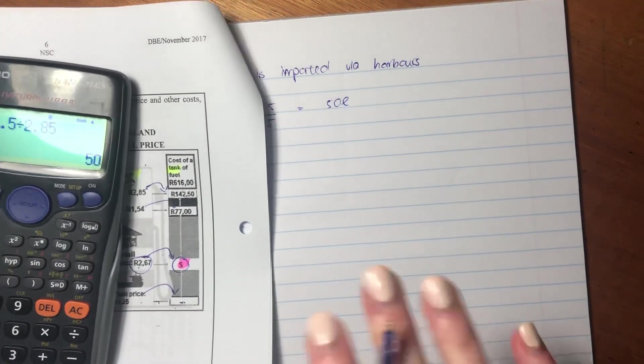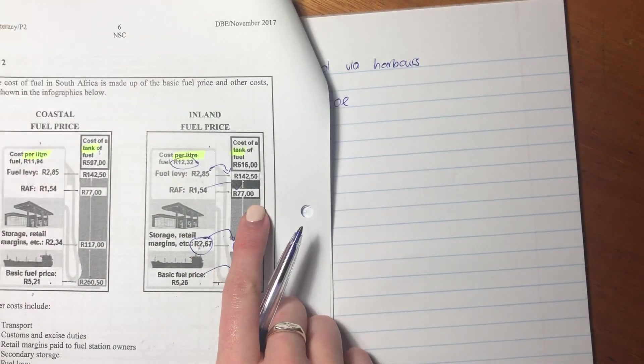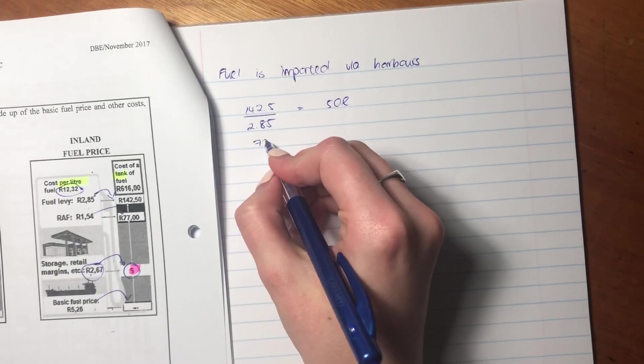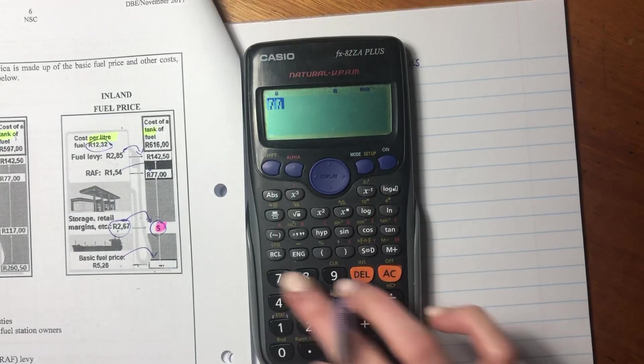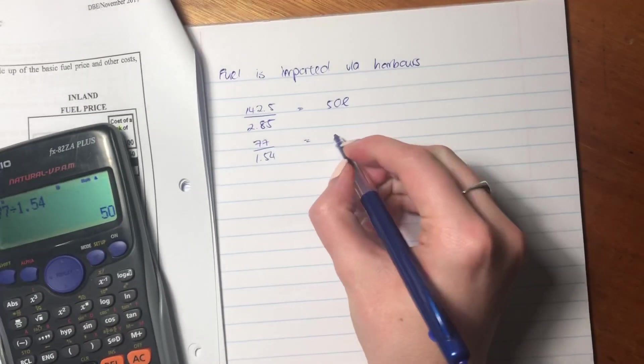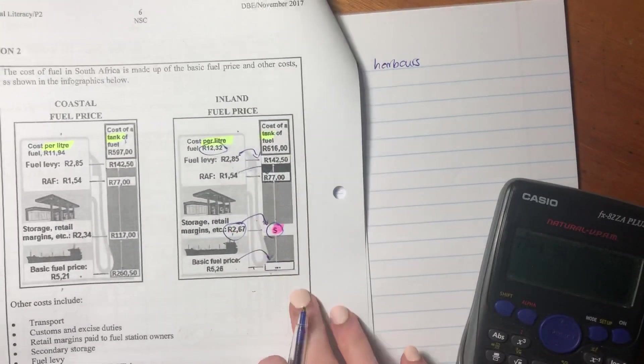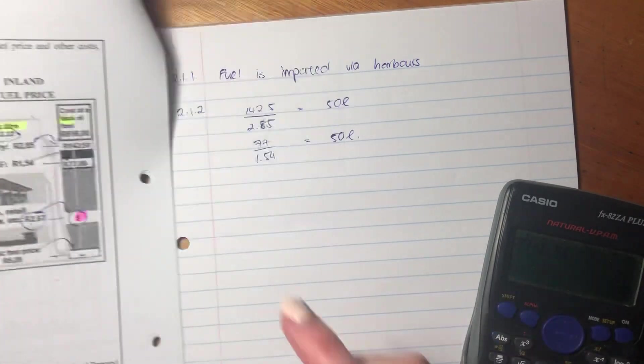Now, let's just check that it's 50 liters across the board. Let's actually check it with this one here, so let's say 77 divided by 1.54. 77 divided by 1.54, and it's 50 again. So you see that each of the parts is just multiplied by 50 to get its cost in a tank.